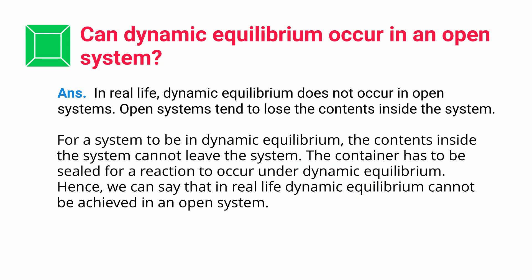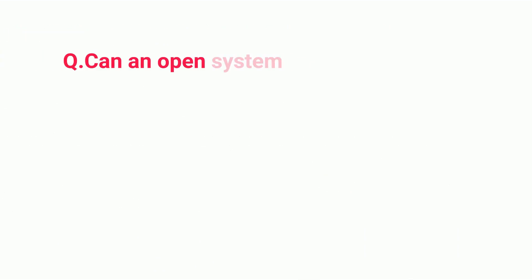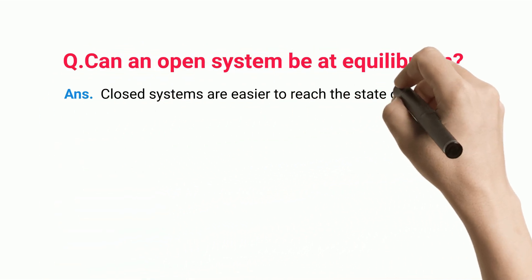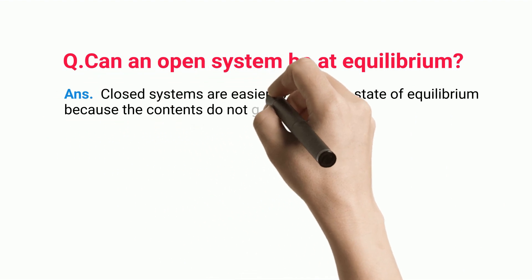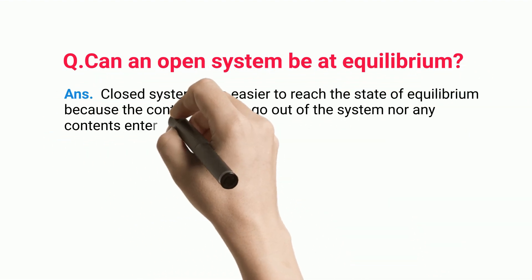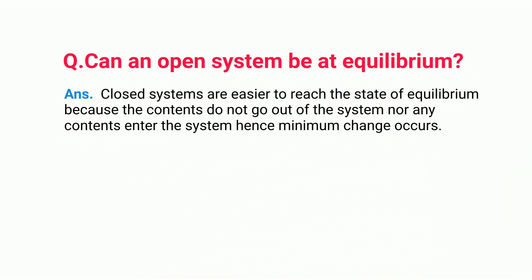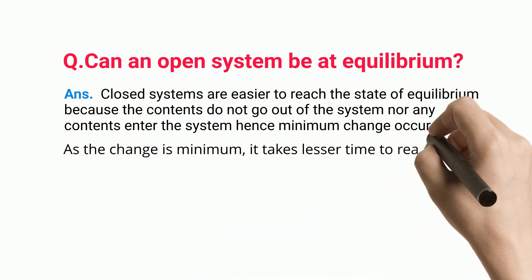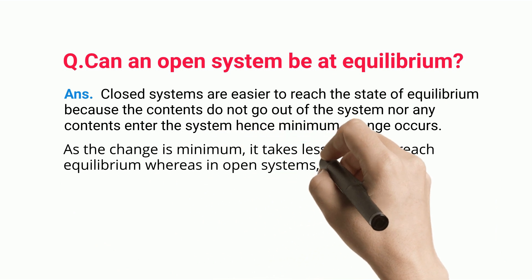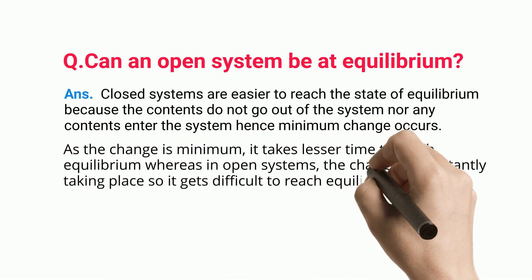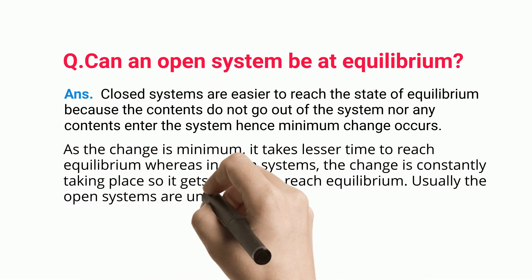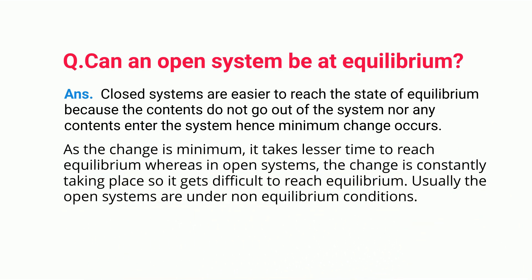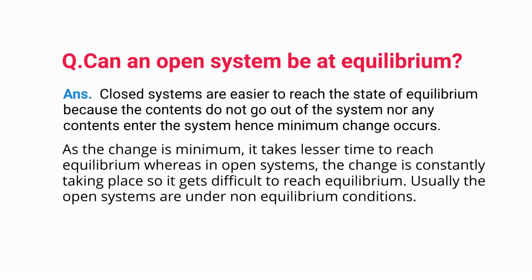Can an open system be at equilibrium? Closed systems are easier to reach the state of equilibrium because contents do not go out nor enter, so minimum change occurs, and it takes less time to reach equilibrium. In open systems, change is constantly taking place, making it difficult to reach equilibrium. Usually, open systems are under non-equilibrium conditions.